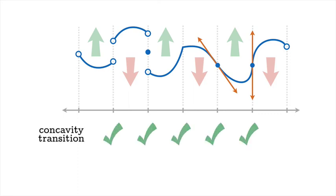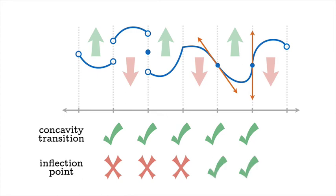So in all cases, we have a concavity transition because we don't really care what happens at the argument. We just care about whether the concavity changes as you move across the argument. But with our much stricter definition of inflection point, we're going to rule out the first, second, and third cases and allow only the last two.